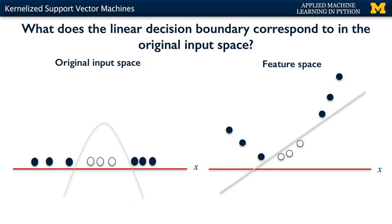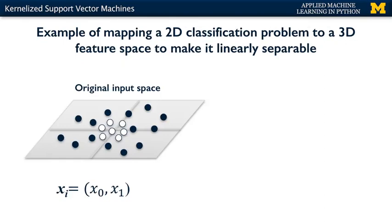Now let's move from a one-dimensional problem to a two-dimensional classification problem and see the same powerful idea in action. Here we have two classes represented by the black and the white points, each of which has two features, x0 and x1. The points of both classes are scattered around the origin (0, 0) in a two-dimensional plane. The white points form a cluster right around (0, 0) that's completely surrounded by the black points. Again, this looks to be impossible for a linear classifier, which in two-dimensional space is a straight line, to separate the white points from the black points with any degree of accuracy.